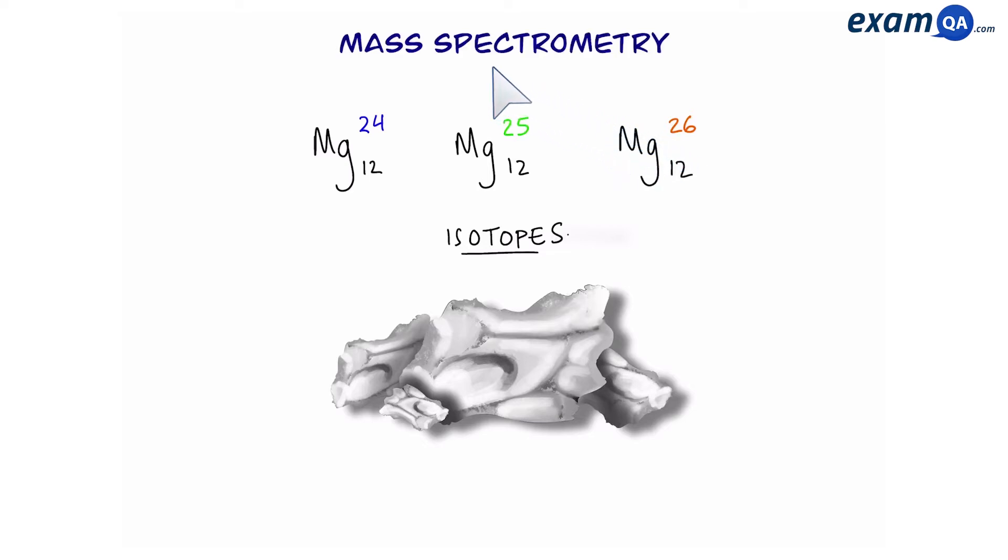Here's a sample of magnesium. Magnesium has three isotopes: 24, 25, and 26. Let's say we want to know exactly how much of each isotope we have. To do that, we're going to do mass spectrometry.